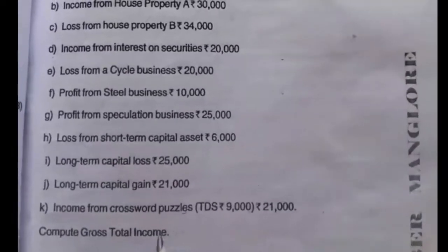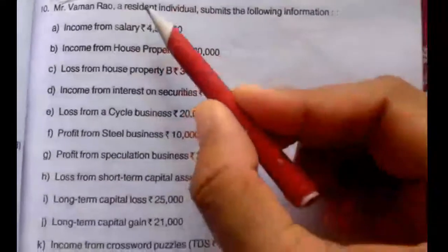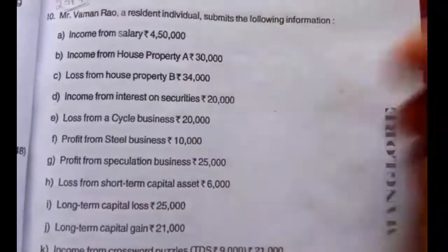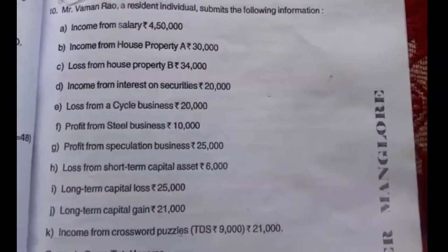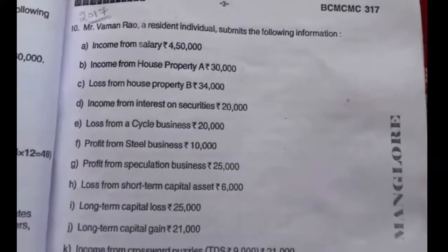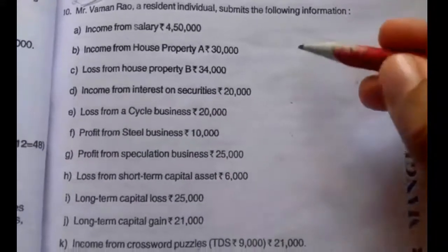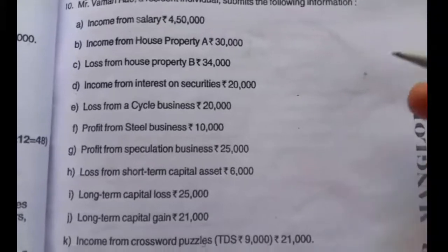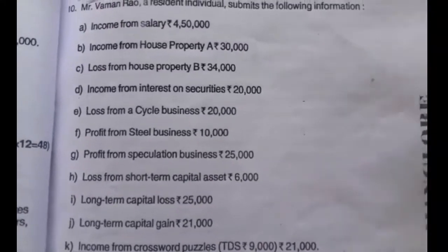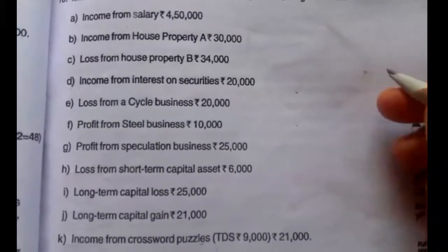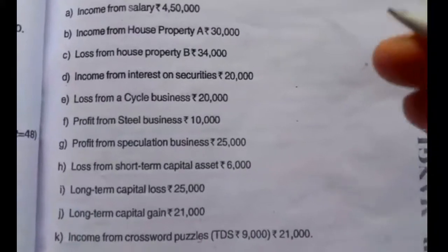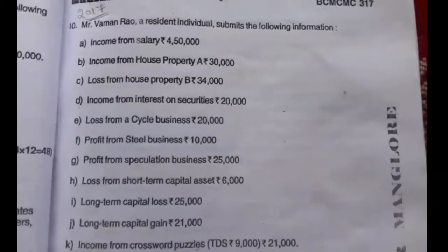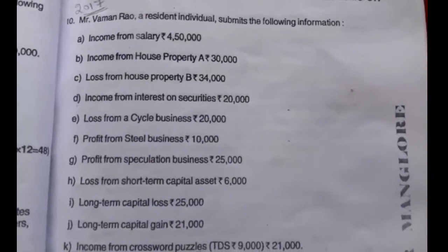Here we have to find out the gross total income across all five heads of income of Mr. Vaman Rao. He is a resident individual, so we compute the gross total income by adding the five heads of income. They have given information relating to the five heads of income as well as losses from certain heads, so we have to find which losses can be set off against which income.